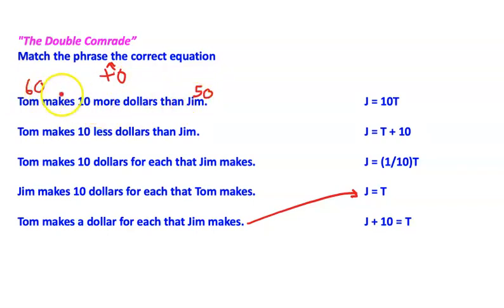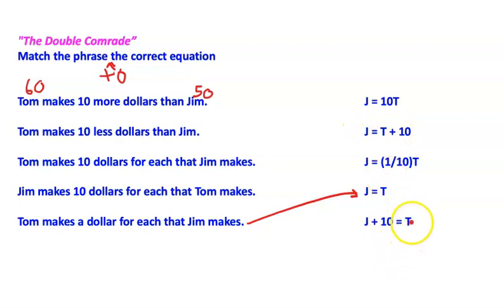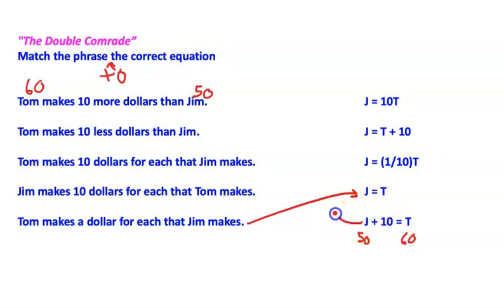Now, if you put in fifty dollars for Jim, which equation would give sixty dollars for Tom? Tom plus ten equals Jim? No — Tom actually makes ten more than Jim, so it would be Jim plus ten equals Tom. If you put Jim's fifty dollars in: fifty plus ten equals sixty. So this phrase matches this equation right here.